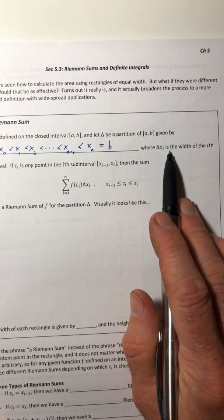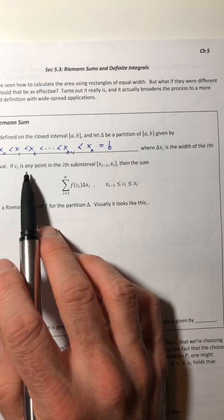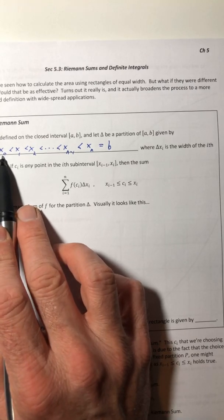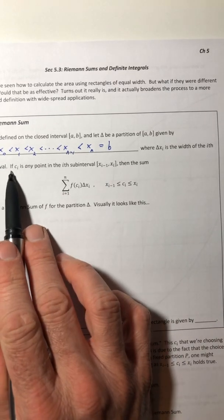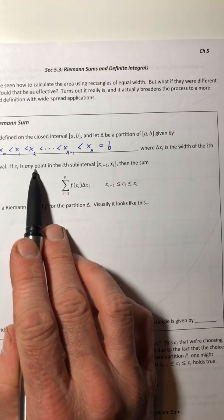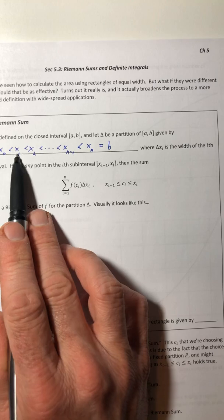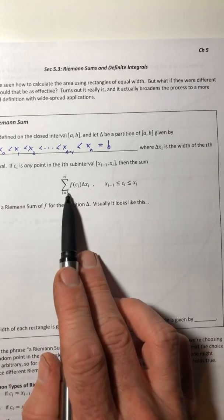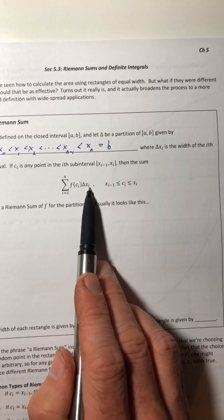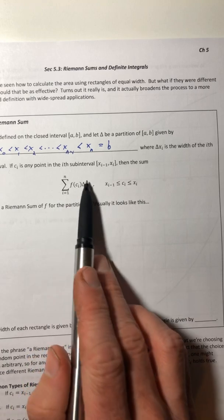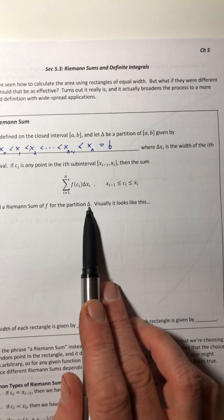So delta x sub i is the width of the i-th sub interval. So it's the distance from x sub zero to x sub one or from x one to x two, x two to x three and so on. So c sub i is any point in that interval. So if it's anywhere in between like these two x's or in between these two x's then the sum, and we've seen that before. So this is the height, that's the width. So it's taking those rectangles again. So this sum in particular is called a Riemann sum of f for the partition delta.